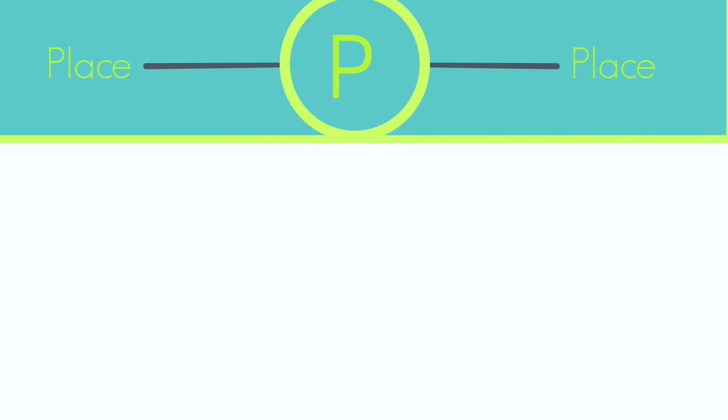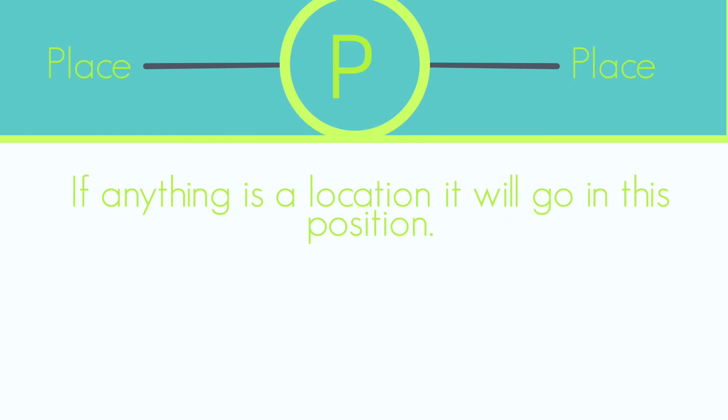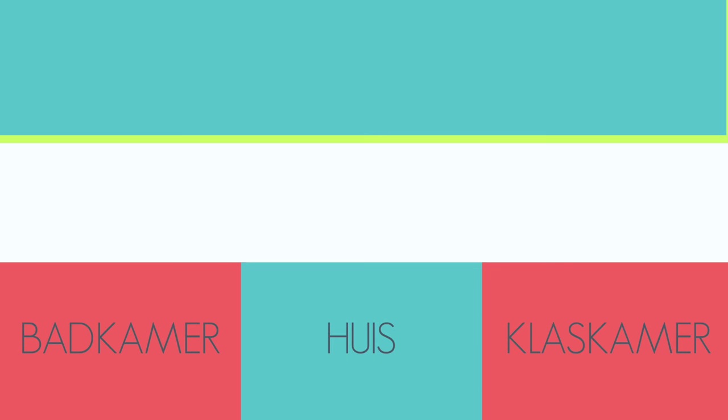The P is next, and it stands for PLACE. This is a pretty straightforward one. Basically, if anything is a place or a location, it goes in the position of a P. Examples of place words are basically anything that you can DO anything in, like VELD, HUIS, or PLAS.